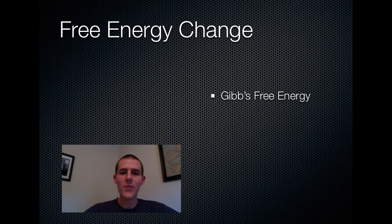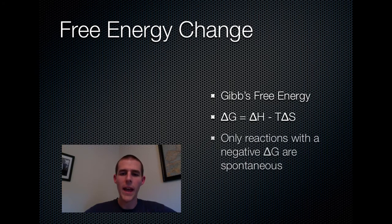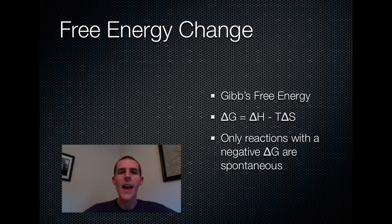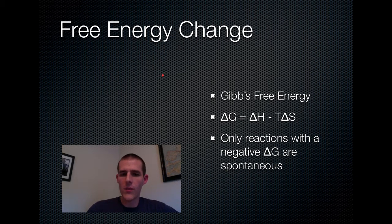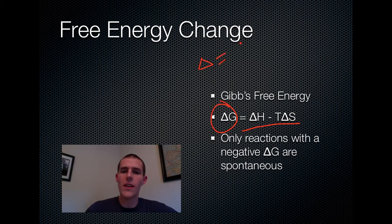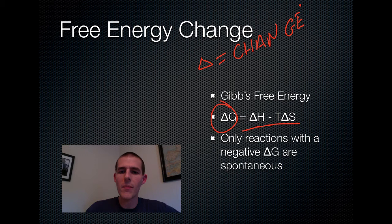The first thing you need to know about is free energy change. There's this guy named Gibbs, and he did some calculations around reactions and whether a reaction will happen spontaneously — meaning on its own without any help — or whether it needs some energy to get going. Out of his research, he put together this equation: delta G equals delta H minus T delta S. Delta is a Greek letter that means change, so in science, anytime you see that Greek letter delta, that means change in something.